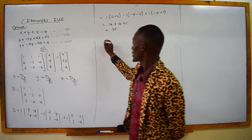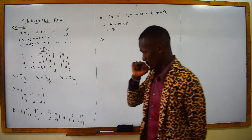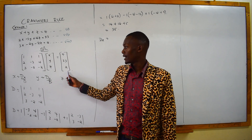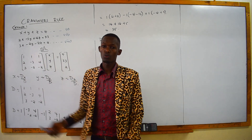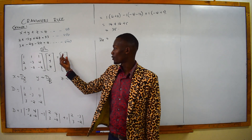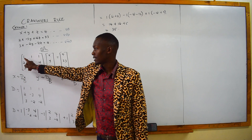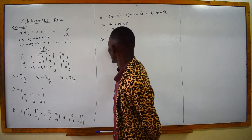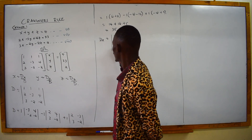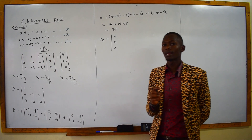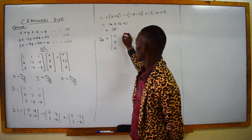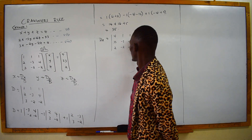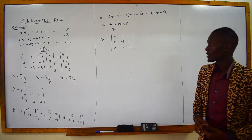Then we now come to our Dx. Our Dx is found by replacing the x-column terms with the right-hand side constants 4, 33, and 2. So you find the determinant of: 4, 33, 2 in the first column, then the y-terms 1, negative 3, negative 2, and the z-terms 1, 4, negative 2 remaining.